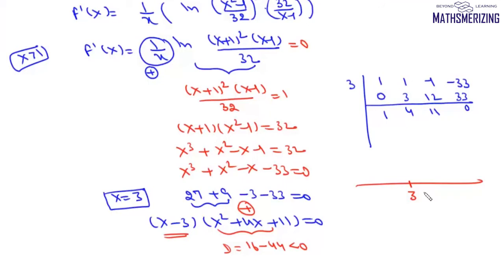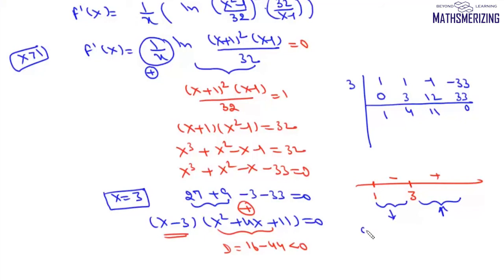For x > 3, the numerator (x+1)²(x-1) exceeds 32, so the log is positive and f'(x) > 0. For 1 < x < 3, the log is negative and f'(x) < 0. Therefore, f(x) is decreasing on (1, 3) and increasing on (3, ∞).